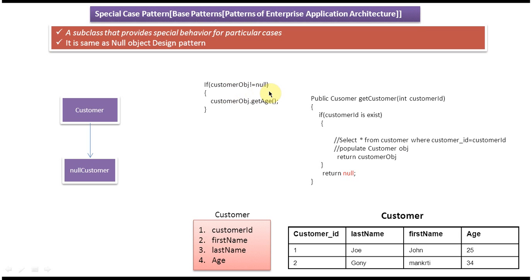If you are not doing this null check, a NullPointerException will occur at runtime and the application will break. Suppose this method is called in 100 places — then we have to do this kind of null check in all 100 places. To avoid this, we can use the Special Case Pattern.